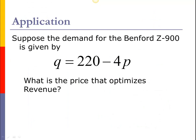Okay, so with that we're ready to go. All right, so we've got the demand formula for the Benford Z-900, and what we're looking at here is a nice little straight line linear demand function, because this is an equation of a line, power 1 here, that's an understood power 1 for the P.